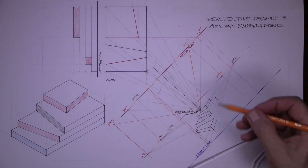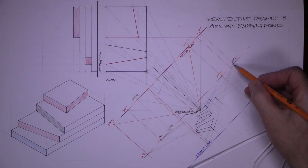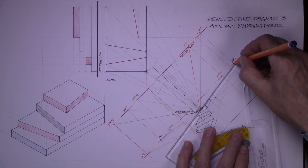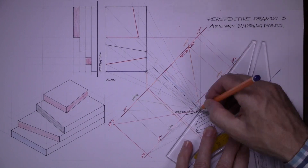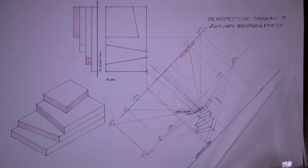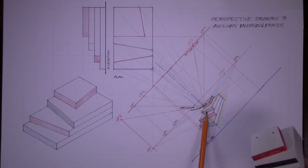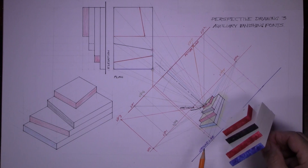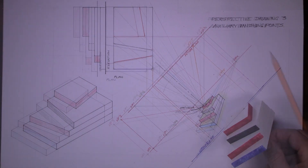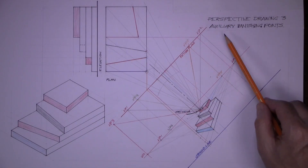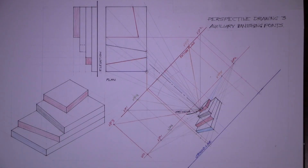Join this point back to vanishing point 1, and the back point here back to vanishing point 2. And that's the perspective view complete. And that's Perspective Drawing 3: Auxiliary Vanishing Points complete.